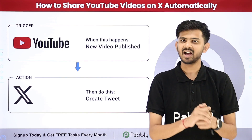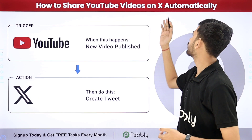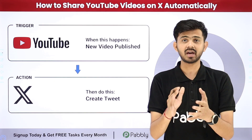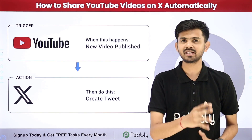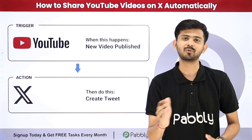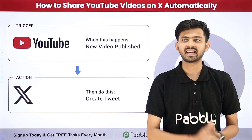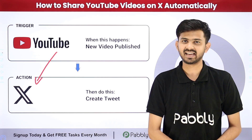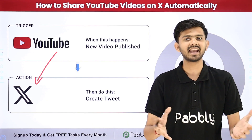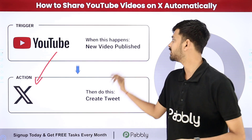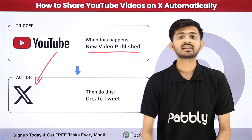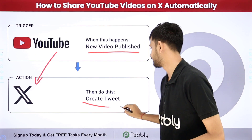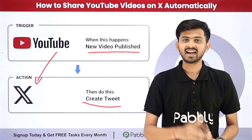Hello everyone, welcome back to Pabbly. Today our topic is how to share YouTube videos on X automatically. What I want is that as I regularly post videos on my YouTube channel, they automatically get shared as a tweet on my X account to reach a wider range. For that I need to build a connection between YouTube and X using Pabbly Connect, which is an amazing software for automation and integration.